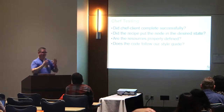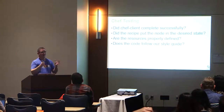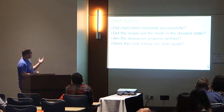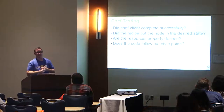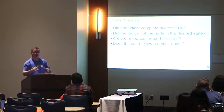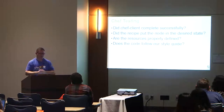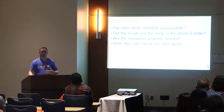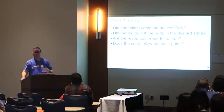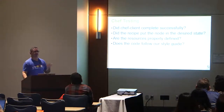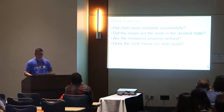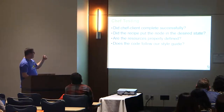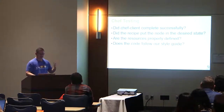But of course just completing successfully doesn't tell us: is the system configured the way we want? So the next question: did the recipe put the node in the desired state? If we can write an automated test for that, we have even more confidence — and we can do all of that locally before we even publish anything or try to run it in production. Other questions include: are the resources properly defined? And does this code follow our style guide? We're going to answer at least two out of the four questions.